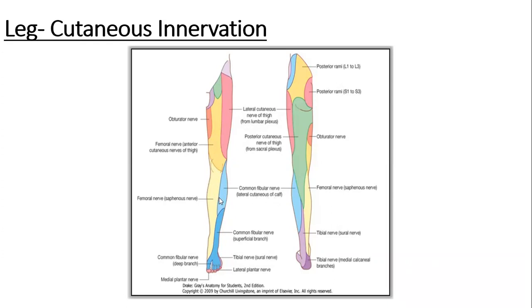Here you can see in these both diagrams, this is the anterior view, this is the posterior view, and here we have lateral cutaneous nerve of calf which is also called lateral sural cutaneous nerve.